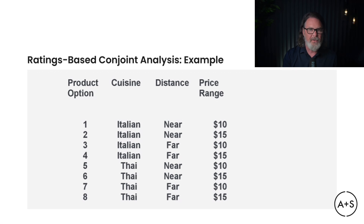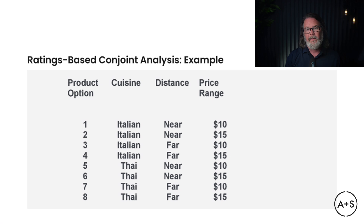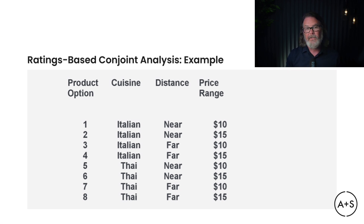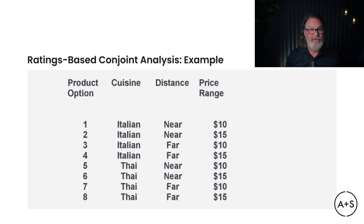To illustrate the process of conjoint analysis, let's use a very simplified example. Imagine we are launching a new restaurant and are unsure of the features to offer — like the cuisine type, the location, and the price we charge. We are conducting a conjoint analysis with a survey where participants are presented with eight different product profiles that vary along different characteristics, each with a couple of different options. For cuisine, they can choose between Italian or Thai; for location, near or far; for price, $15 or $10. Those choices — Italian or Thai, near or far, $15 or $10 — are the levels of their respective attributes: cuisine, distance, and price range.